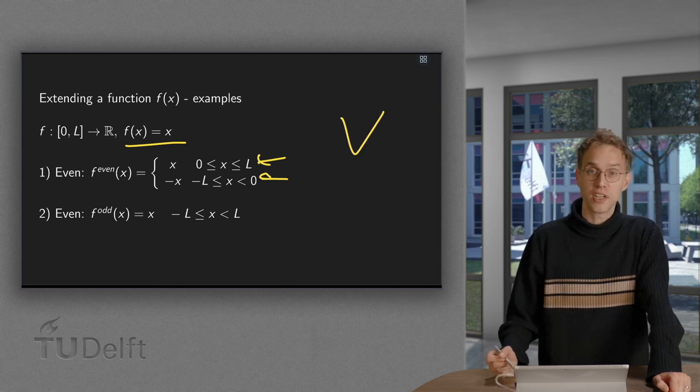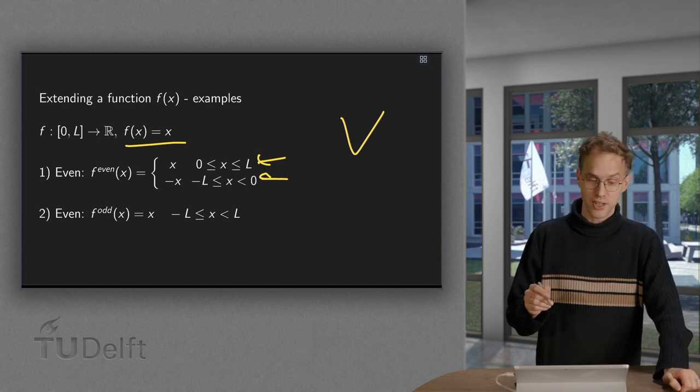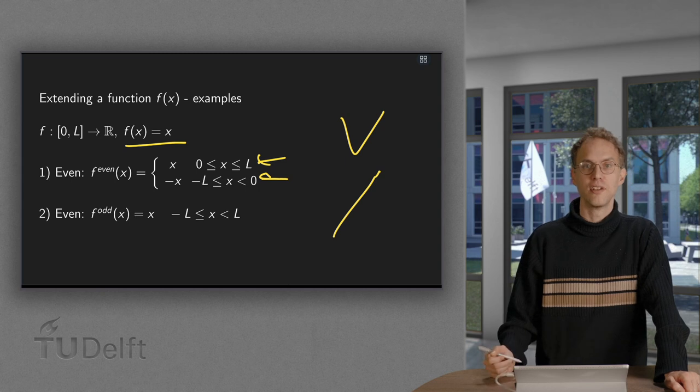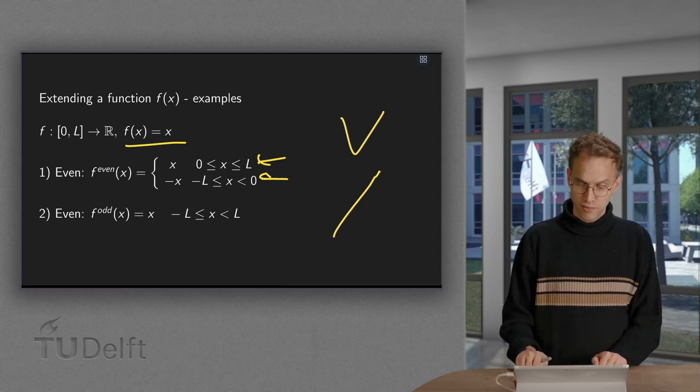If we make our odd extension, we have x between 0 and l, and also x between minus l and 0, and that looks like that. There we have our odd extension. Now we are going to find the Fourier series.